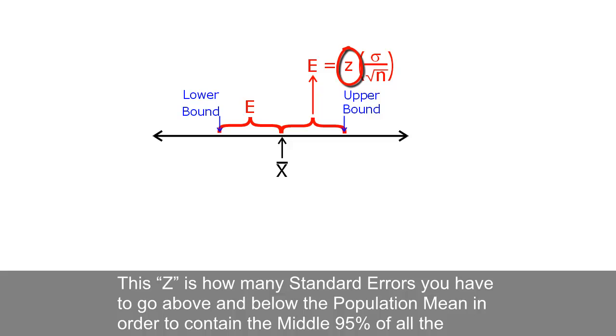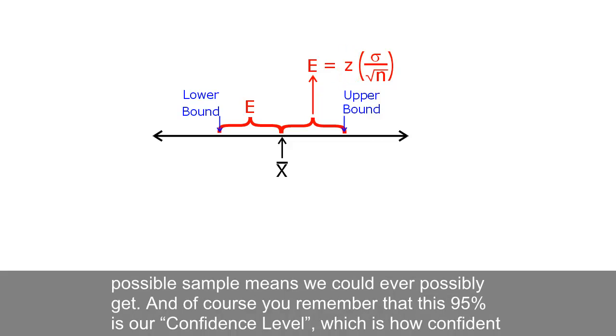This z is how many standard errors you have to go above and below the population mean in order to contain the middle 95% of all the possible sample means we could ever possibly get. And of course,